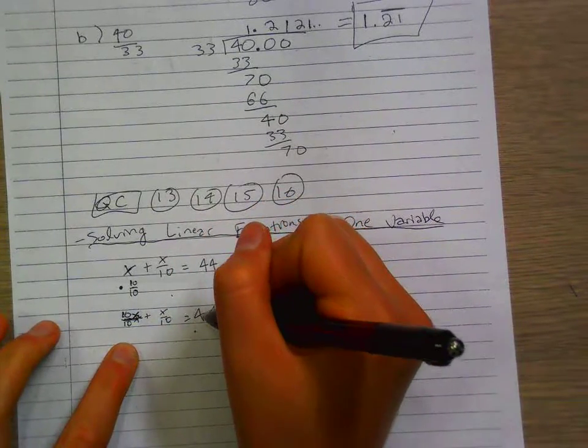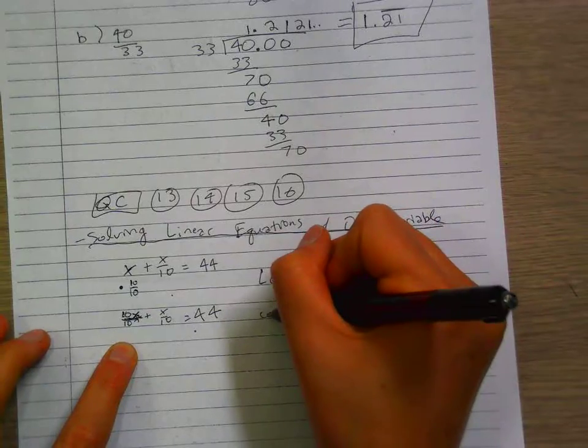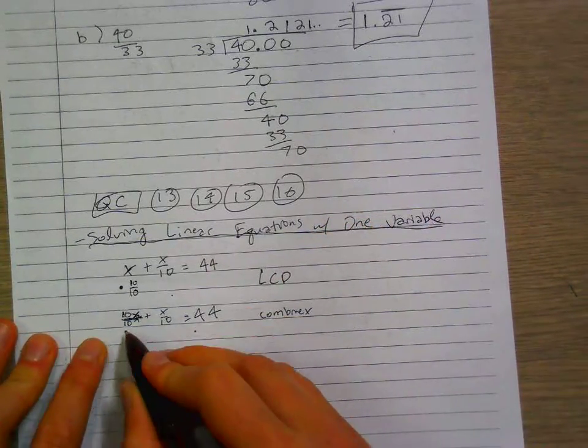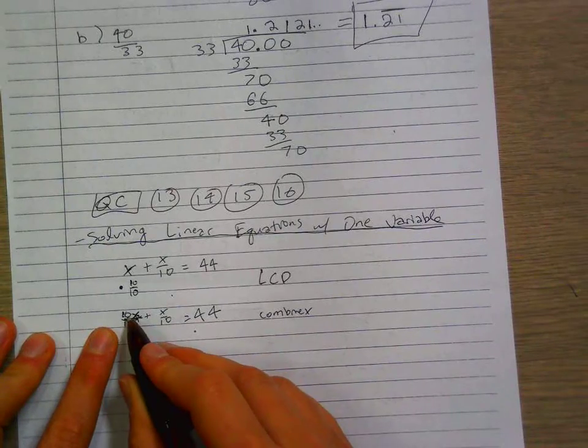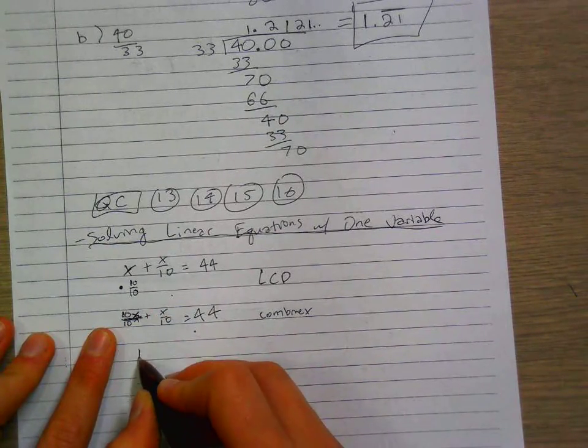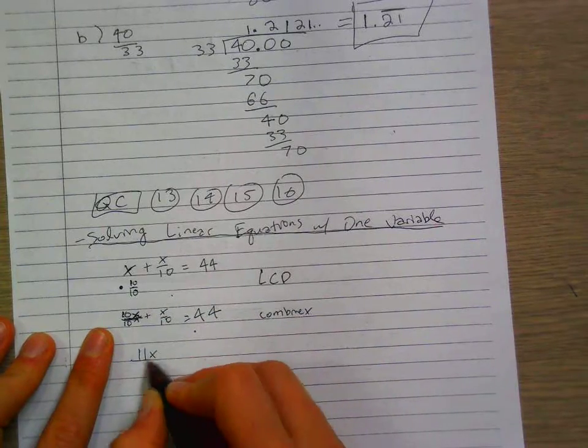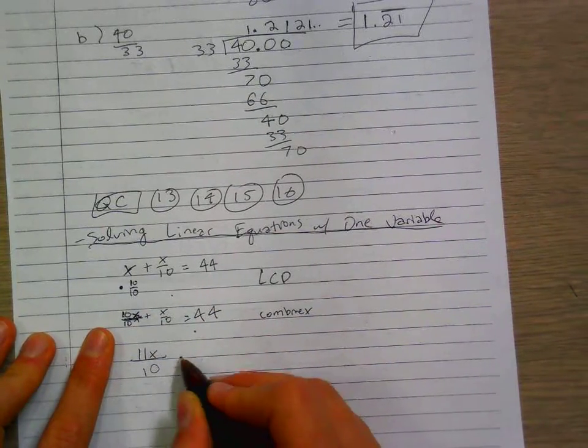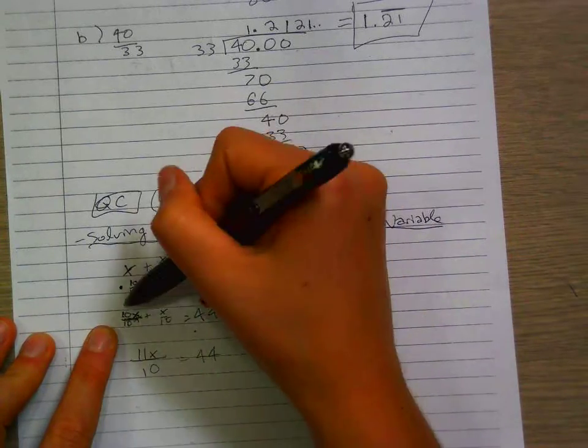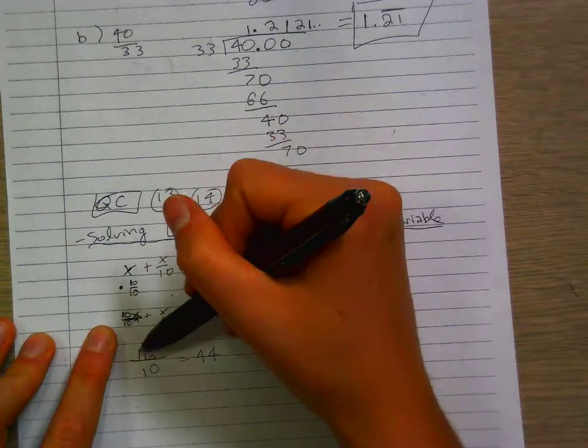Now let's combine into x. So 10 plus 1 equals 11x. The bottom stays the same as 10, and that equals 44. We just combined, we just said 10 plus 1, and that equals 11.